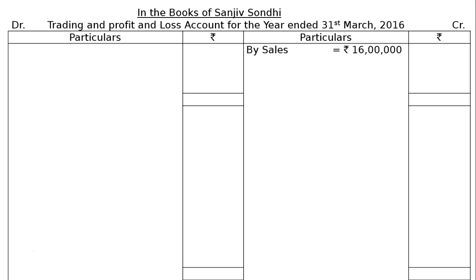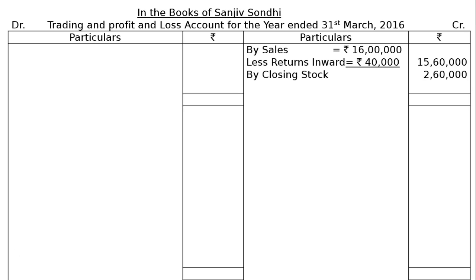On the credit side: Sales Rs. 16 lakh, less returns inward Rs. 40,000, giving a net sales figure of Rs. 15,60,000 in the final column. Then by closing stock Rs. 2,60,000. On the debit side, opening stock is not there because it is a newly started business.